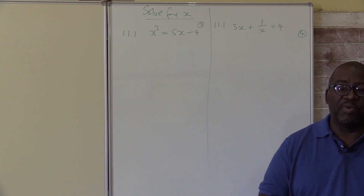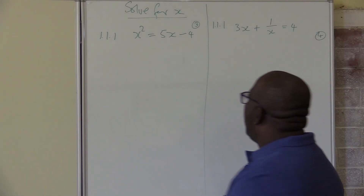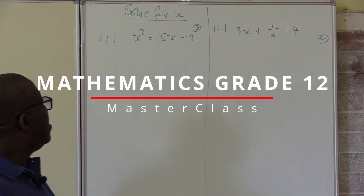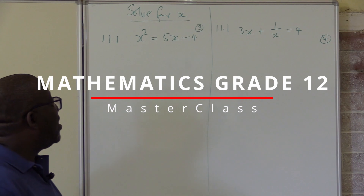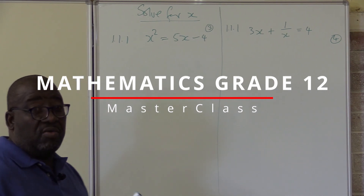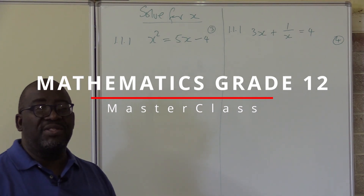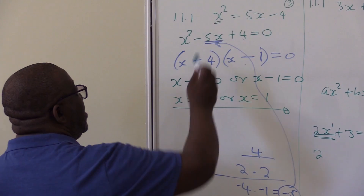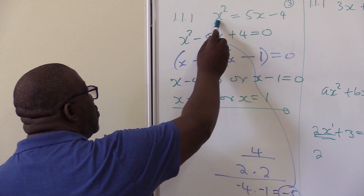Let's continue with our algebra. The first question I want us to look at is x squared equals 5x minus 4. The question will of course be saying solve for x. This is x to the power 2.